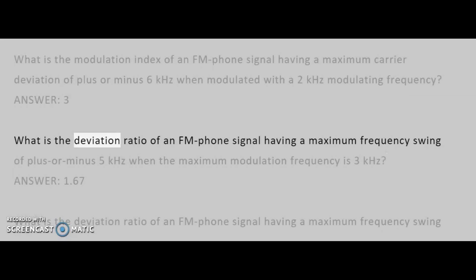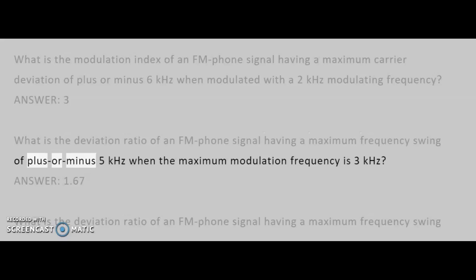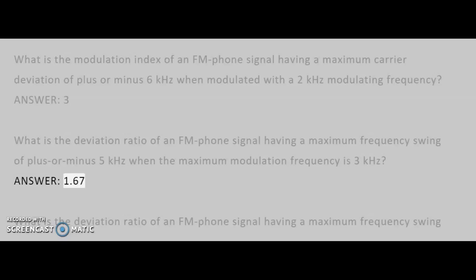What is the deviation ratio of an FM phone signal having a maximum frequency swing of plus or minus 5 kHz when the maximum modulation frequency is 3 kHz? Answer: 1.67.